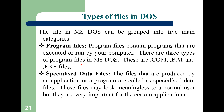Next is types of files in DOS. There are different types of files that are necessary for working in DOS. First is program files — program files contain programs that are executed and run by your computer. There are three types of program files in MS-DOS: .COM, .BAT, and .EXE files. These files are needed by MS-DOS to run external commands.